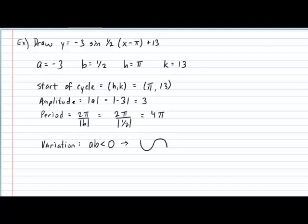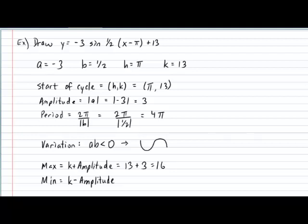Next, let's determine the maximum value for this graph. The maximum is calculated with k plus the amplitude, so it equals 13 plus 3, which gives 16. Finally, let's determine the minimum value. The minimum is calculated by doing k subtract the amplitude, so it equals 13 subtract 3, which gives us 10. So y equals 10 will be the lowest point of our graph.